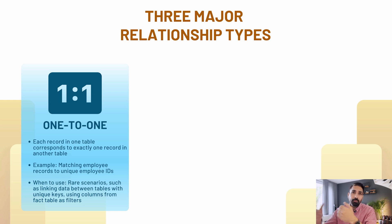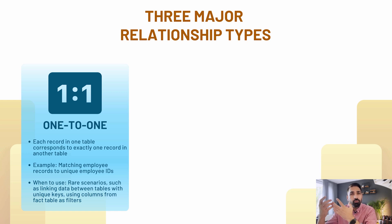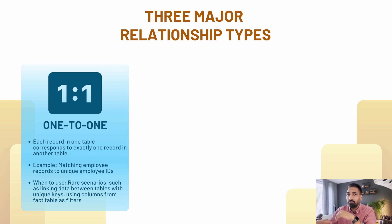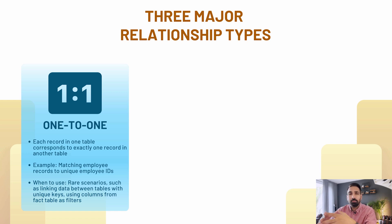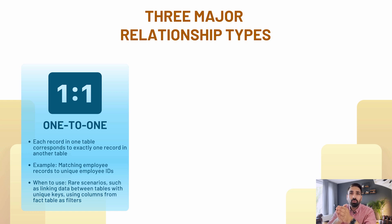In Microsoft Power BI, when we see a one-to-one relationship, the best approach is generally to merge those tables. There are exceptional scenarios where you keep it — for example, matching employee records to unique employee IDs, or linking data between tables using a column from the fact table as a filter. In my experience, merging covers most cases. In data modeling, you can either flatten (denormalize) all data into one big fact table, or use dimensional modeling. Flattening causes data redundancy, ambiguous results, and maintenance difficulty.